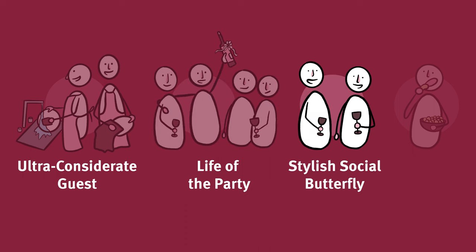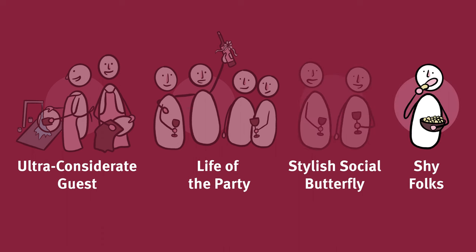Or maybe the stylish social butterfly who made sure to say hi to a lot of different people for a short period of time. And then the shy folks standing in the corner by themselves just watching other people. Those two different ways of categorizing people at a party are really different. We can get a lot of insights from those more holistic character depictions that we wouldn't learn from just counting the number of people each guest talked to on average.